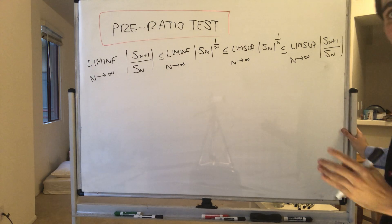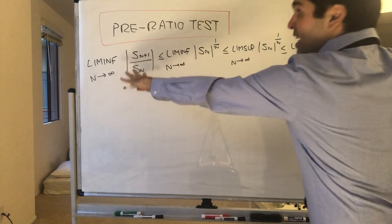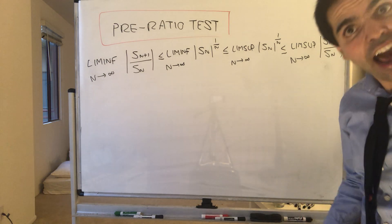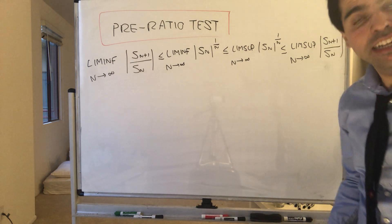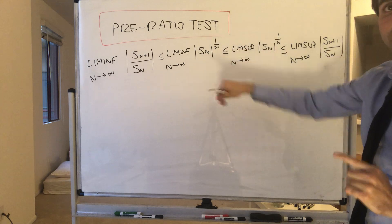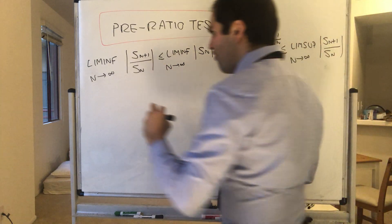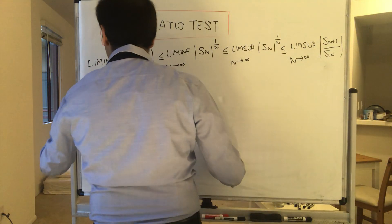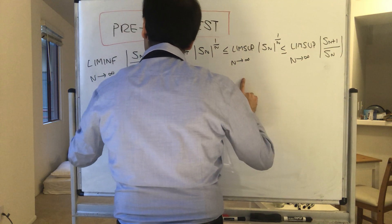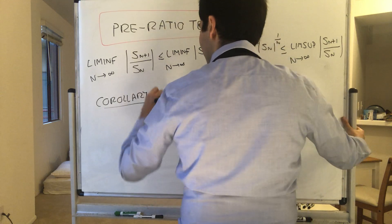In other words, the root part is squeezed between the ratio part, and ironically this will show that the root test is better than the ratio test in the following sense. So, corollary — we will prove this soon — but let me show you why this is so useful.